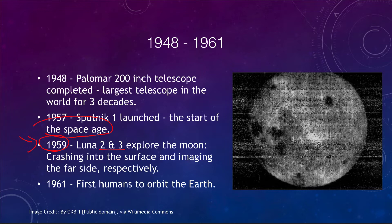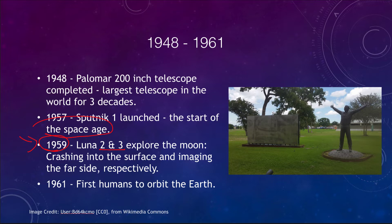In 1961, just four years after the first artificial satellite was launched, we had the first humans to orbit the Earth. And less than a decade later, we would actually put men on the moon.